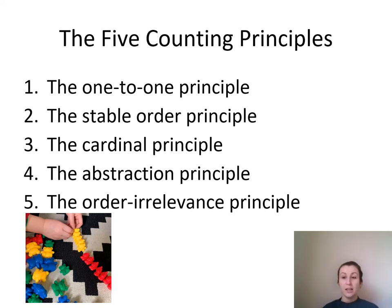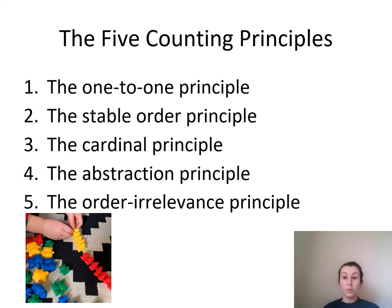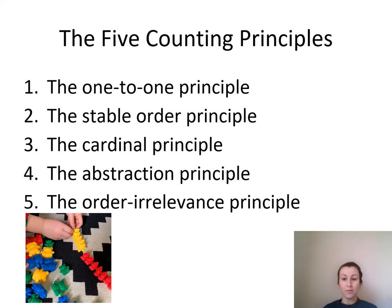Counting principle number three: this is where children learn that the number assigned to the final object — so if we're counting to five: one, two, three, four, five — five is the last number said, and that is the total number of objects in that set. Children need to confidently do principles one and two first. From a larger group, children will be able to select a given number — for example, select five bears from 20 — and when asked how many there are, they will say 'I have five' without having to count again.